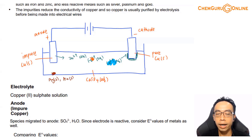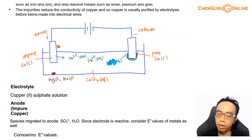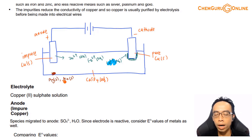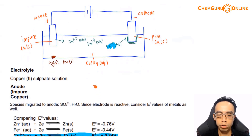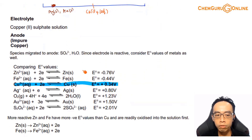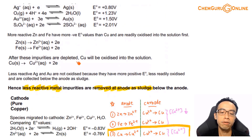So to summarise: zinc and iron can go into solution but remain there as cations and cannot be deposited. Less reactive metals like silver and gold cannot even dissolve — they just drop to the bottom. This is how one single electrolytic process removes both more reactive metals and less reactive metals, which is what makes the purification of copper so elegant.